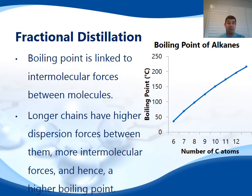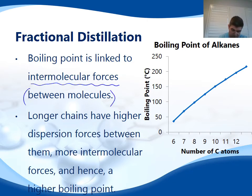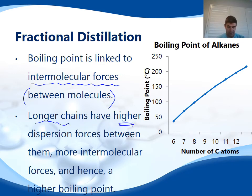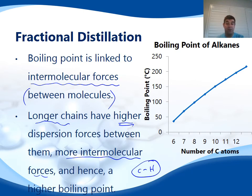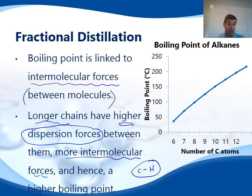The point about fractional distillation is that it's based on differences in boiling point, and boiling point relates to the intermolecular forces — that is, the forces between the molecules, not the intramolecular forces which are within the molecule. The longer the chain, the greater the number of dispersion forces between the individual molecules and hence a higher boiling point. Because each of these is only a carbon and hydrogen compound, the bonds formed between them are only dispersion forces. As the average number of dispersion forces per molecule increases, the boiling point increases — as you can see on the graph, as the number of carbons increases, so does the boiling point.